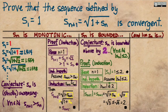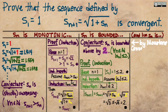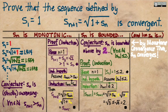We now know that sₙ is a monotonic sequence — in particular, strictly increasing — and also that it's bounded, with 2 being an upper bound for the entire sequence. Therefore the monotone convergence theorem guarantees that sₙ is a convergent sequence. We've now proven that sₙ converges without having to use epsilon-N arguments. What we haven't found yet is what this sequence actually converges to — and now that we know it converges, we can find that answer.